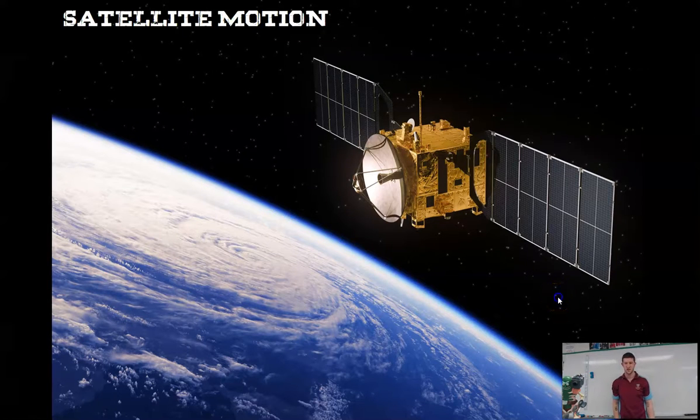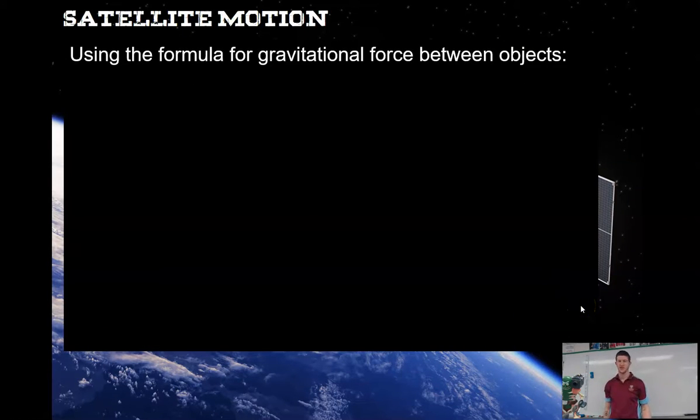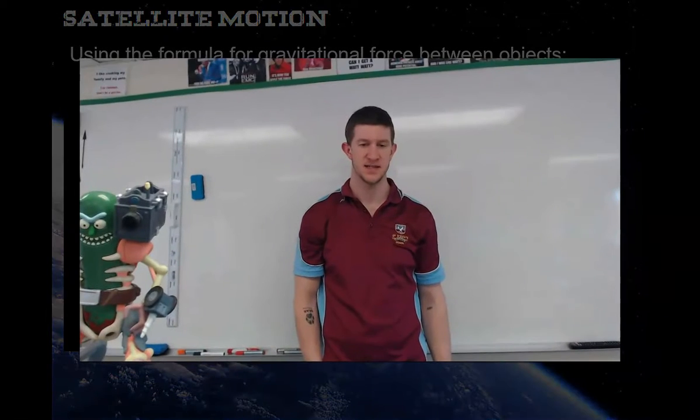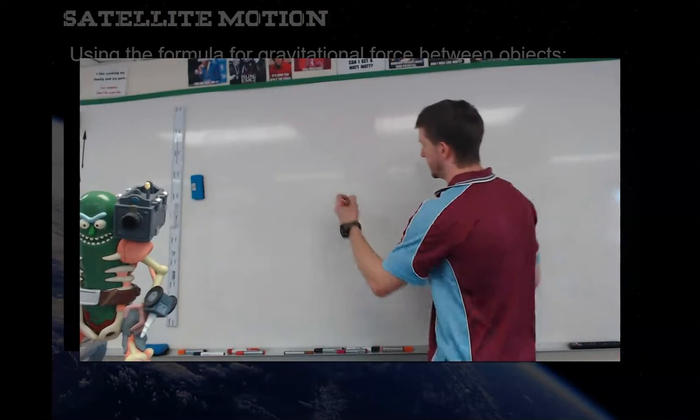For our first equation, we're going to look at the formula for gravitational force between objects and equate that to centripetal acceleration. An example of this is if we are orbiting an object.